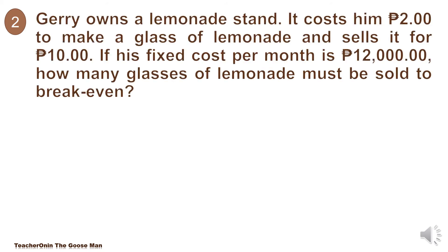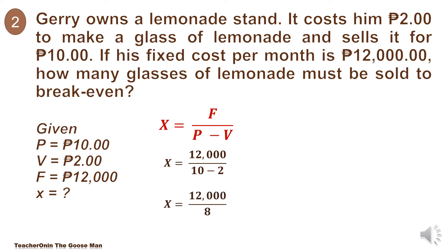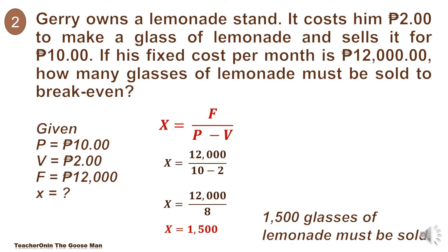Let's move on to our second example. Jerry owns a lemonade stand. It costs him 2 pesos to make a glass of lemonade, and he sells it for 10 pesos. If his fixed cost per month is 12,000 pesos, how many glasses of lemonade must be sold to break even? The price per unit P is 10 pesos, variable cost B is 2 pesos, and fixed cost F is 12,000 pesos. Using X is equal to F divided by P minus B, we have 12,000 divided by 10 minus 2, which is 8. So X is equal to 1,500. Therefore, 1,500 glasses of lemonade must be sold.